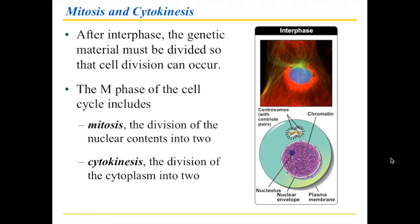Looking at the diagram on the right, you can see on top the cell is basically in interphase. There's a lot of chromatin — you don't see individual chromosomes, just a little bit of yellowish fibers. Those fibers are the beginning of centrosomes as they start to issue fibers that will help with this process. All of the chromatin is contained by the nuclear membrane, and all of it needs to be disassembled so that mitosis can actually take place.